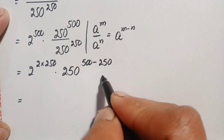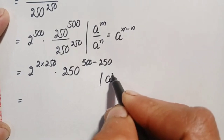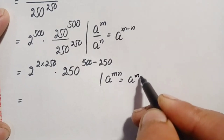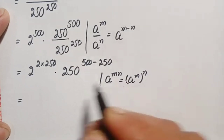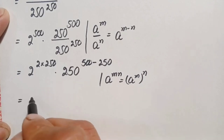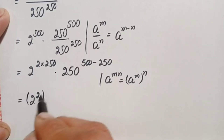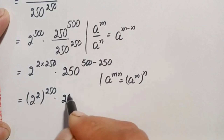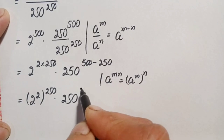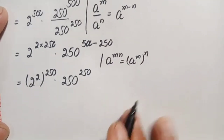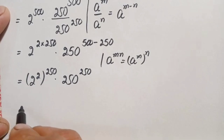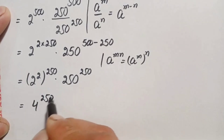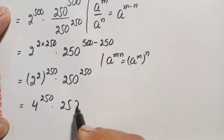Now we use another exponential identity: a raised to power m times n equals a raised to power m, whole raised to power n. Using this identity, we can write 2 raised to power 2 times 250 as 2 raised to power 2, whole raised to power 250, times 250 raised to power 250. Since 2 raised to power 2 is simply 4, this becomes 4 raised to power 250.